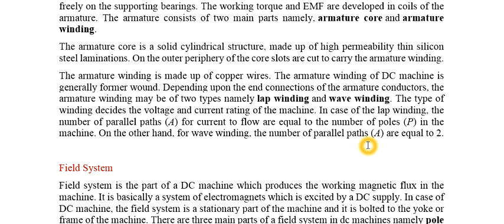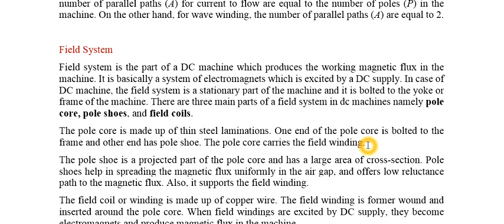The number of parallel paths depends on the winding type. In lap winding, the number of parallel paths equals the number of poles, whereas in wave winding it is always equal to two. Next, the field system — the poles and field windings together — provides the working magnetic flux in the machine.